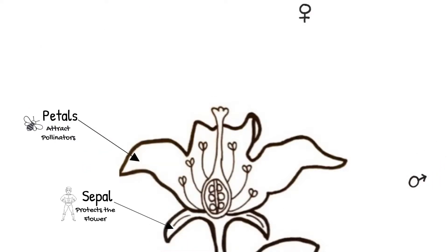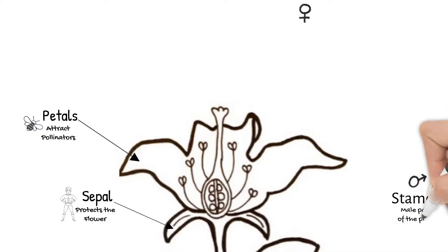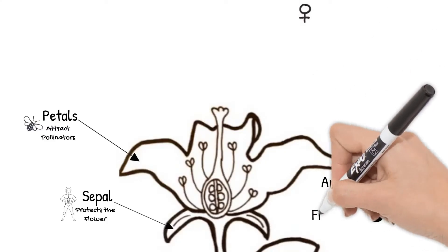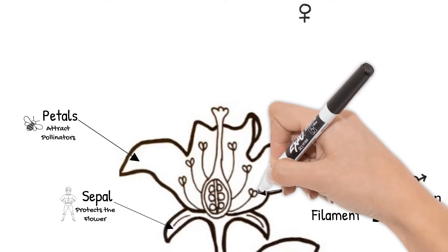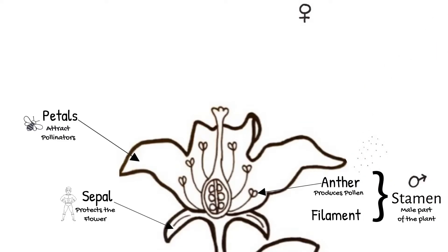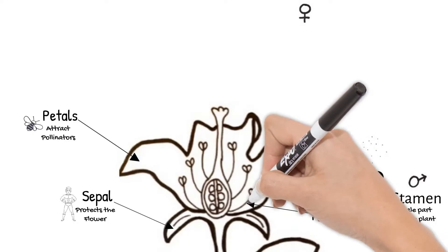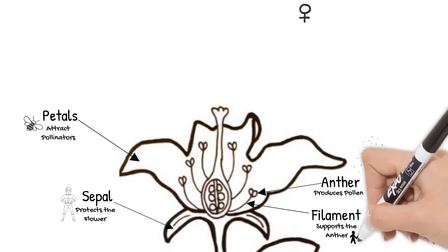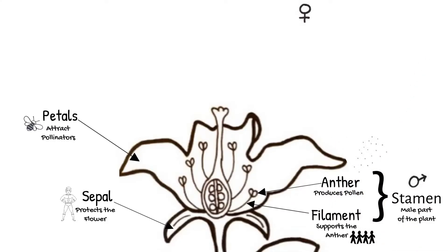The next two parts are the male and female parts of the flower. The stamen is the male part and it is made of two structures: the anther and filament. The anther produces and releases pollen; pollen contains sperm. The filament supports the anther. The number of stamen inside one flower depends on the type of flower — this one has six that you can see.